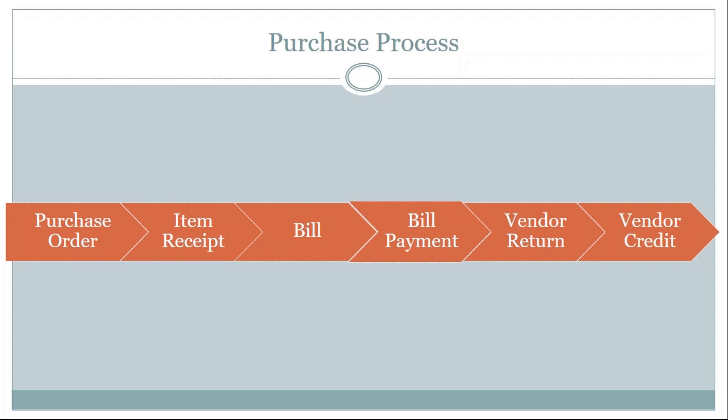The purchase process involves procuring inventory before selling to customers. You need physical inventory before selling goods to end customers. You raise purchase orders with vendors who supply the goods, receive the goods, make bill payments, handle vendor returns, and everything related to the vendor — this is called the purchase process.